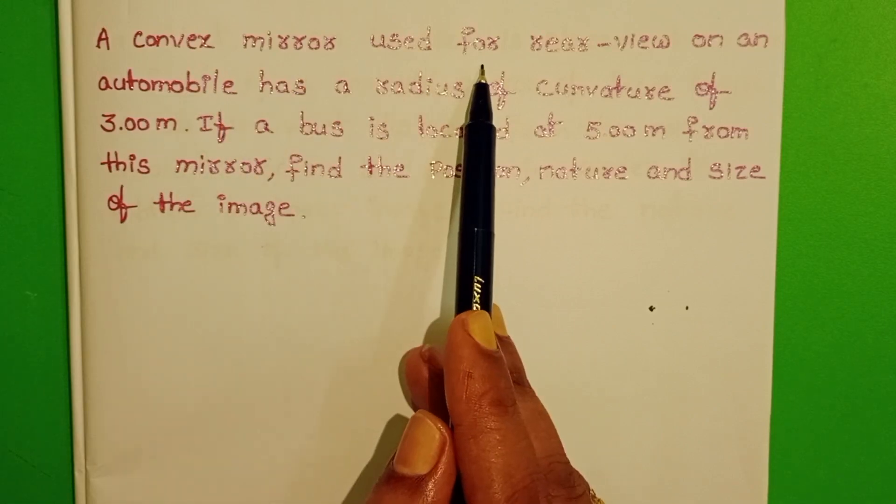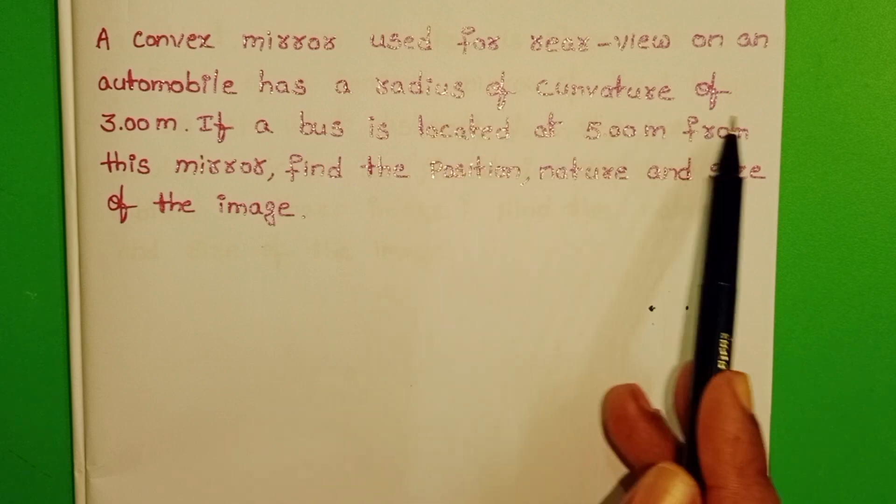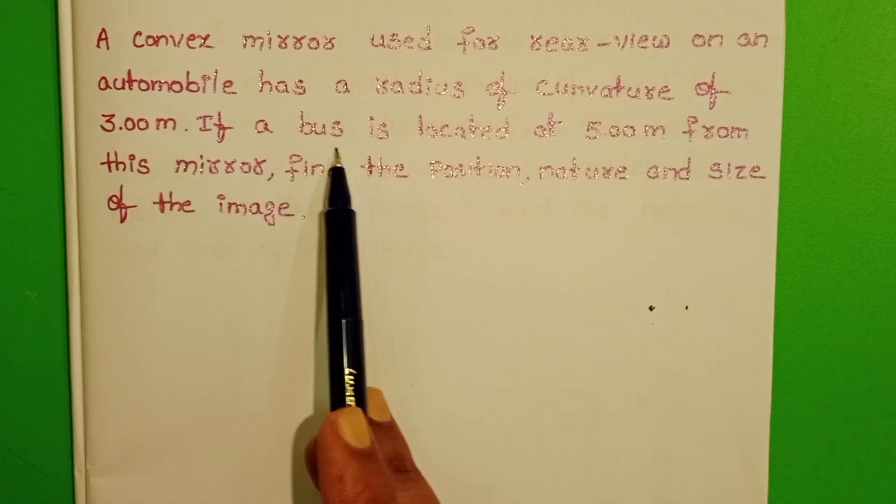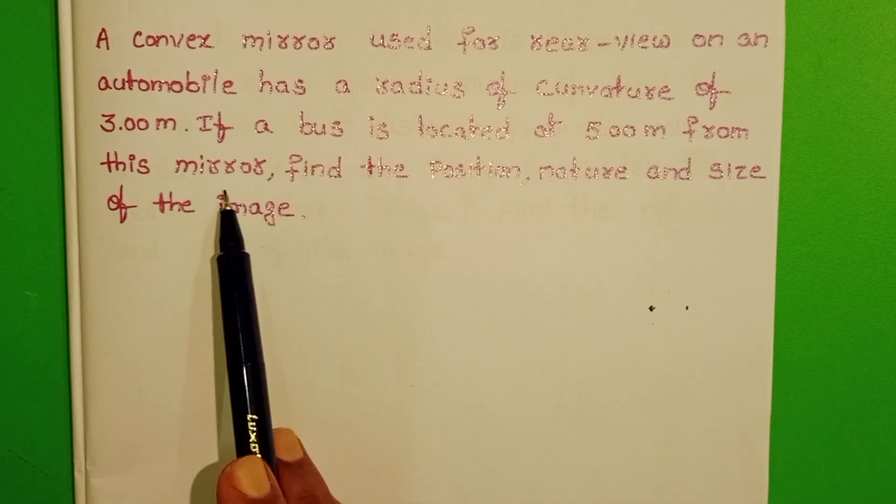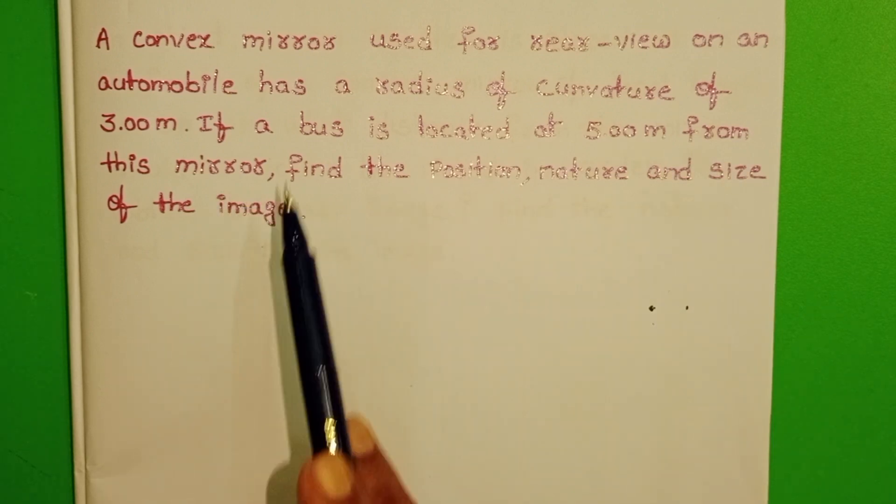A convex mirror used for rear view on an automobile has a radius of curvature of 3 meters. A bus is located at 5 meters from the mirror. Find the position, nature, and size of the image.